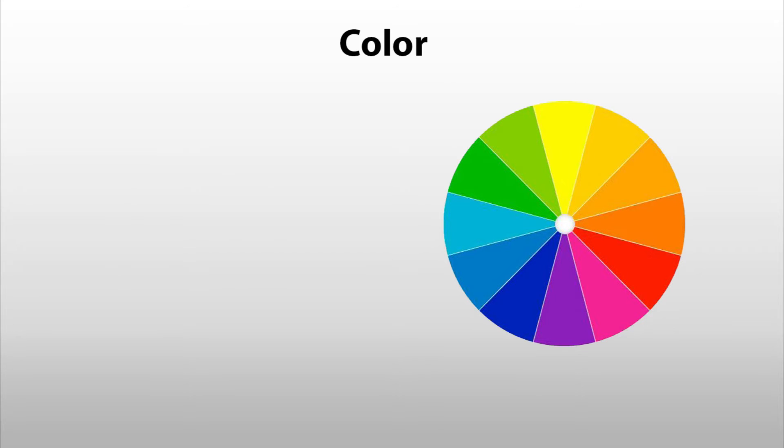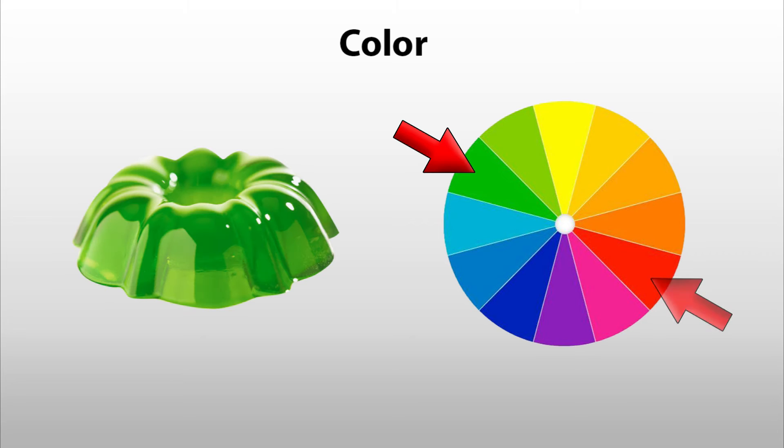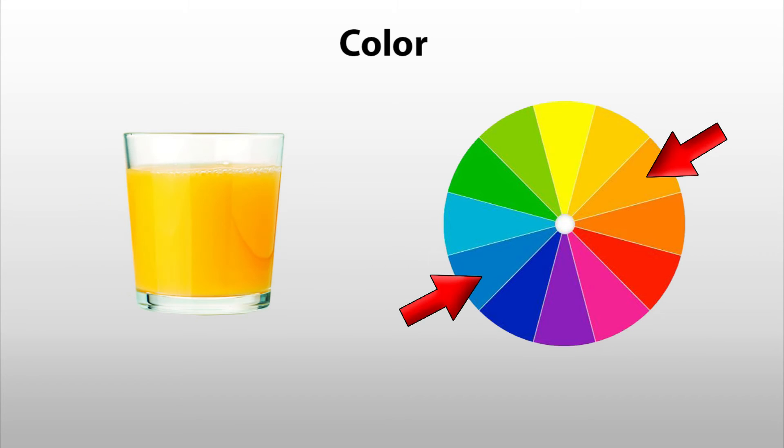The complementary color of green is red, so our green jello absorbs red light. The complementary color of orange is blue, directly across from it. Again, why orange juice is orange is because it absorbs blue light.